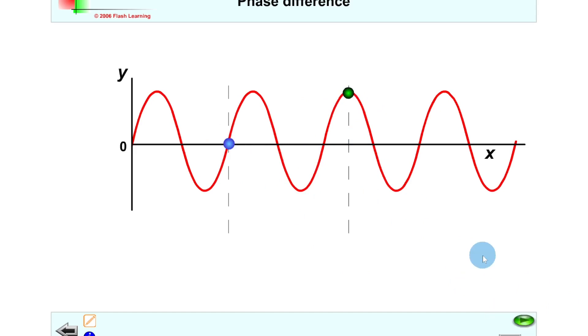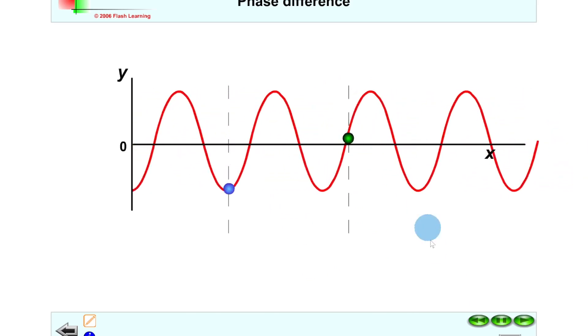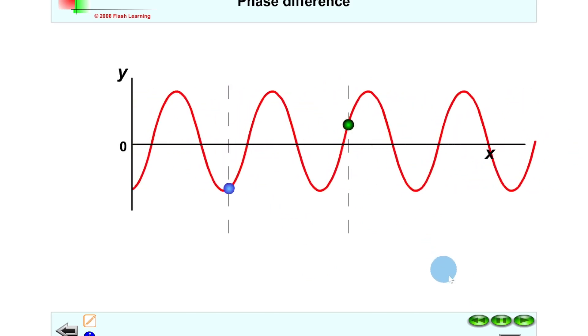Remember phase difference is when one wave lags behind another or when you've got two points on the same wave, one point lags behind another. In this case the blue one is going to be lagging behind the green one. If I click play here you'll see how the particles move where the blue one lags behind the green one. We could work out the phase difference between them.